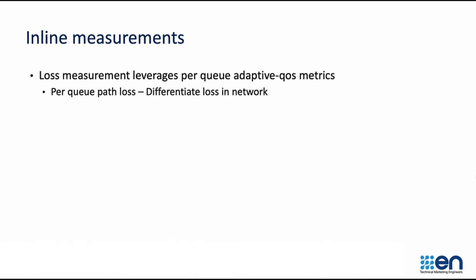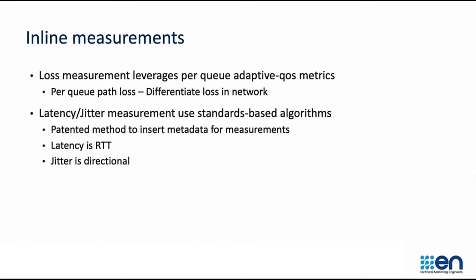When it comes to inline measurements for loss, we leverage per-Q adaptive cost metrics that provide per-Q path loss, and we are able to differentiate local loss versus loss on the WAN circuit. For latency or jitter measurement, we use a standards-based algorithm. We have a patented method to insert metadata. Latency is measured as round-trip time, whereas jitter is measured as unidirectional.